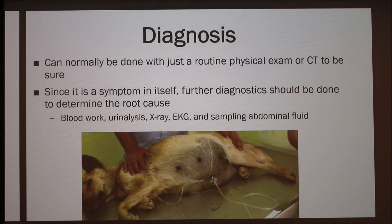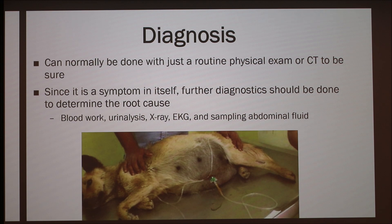Ascites can be diagnosed with just a routine physical exam, and sometimes a CT scan is taken to confirm it is fluid in the abdomen. Since it's a symptom in and of itself, further diagnostics should be done to determine the root cause — things like blood work, tests for protein levels and blood pressure, urinalysis, x-rays, and EKGs to determine whether it's heart failure.